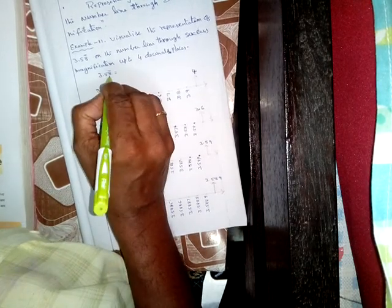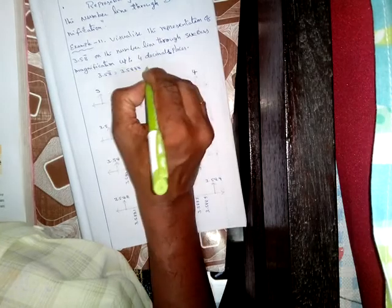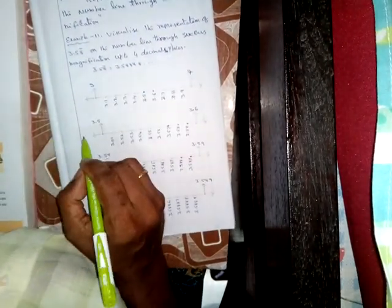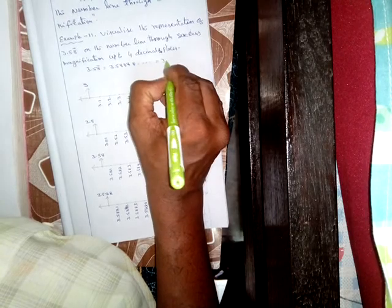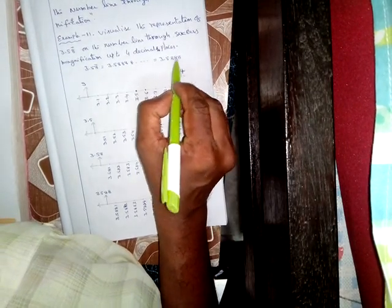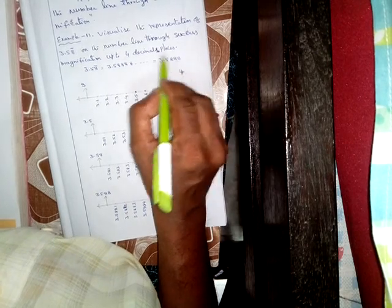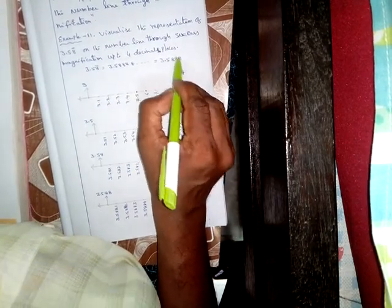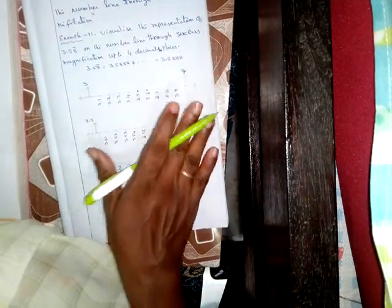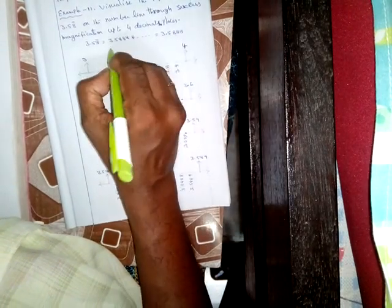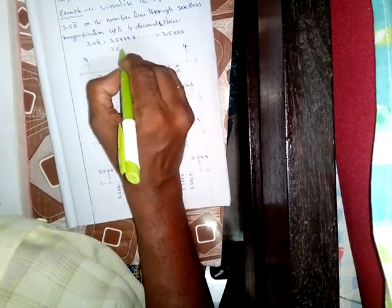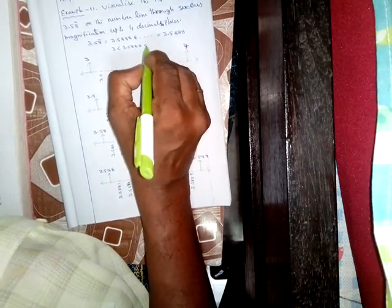Here we visualize the representation of 3.58 bar on the number line through successive magnification up to 4 decimals. The bar is on 8, meaning 8 is repeating — so 3.58 bar equals 3.5888... and so on. We are asked to represent up to 4 digits after the decimal, so 3.5888. This number lies between 3 and 4, since 3 < 3.5888 < 4.